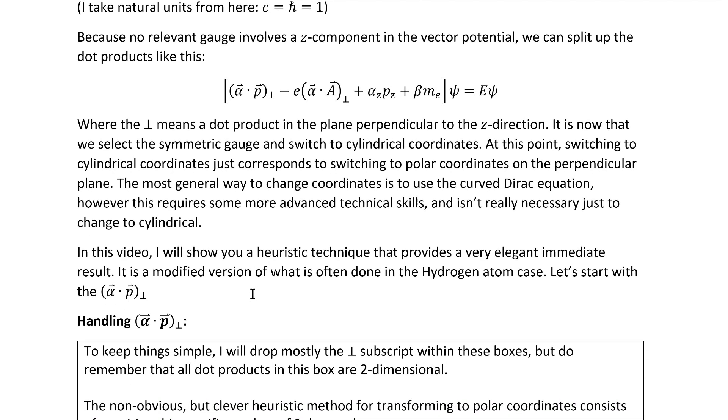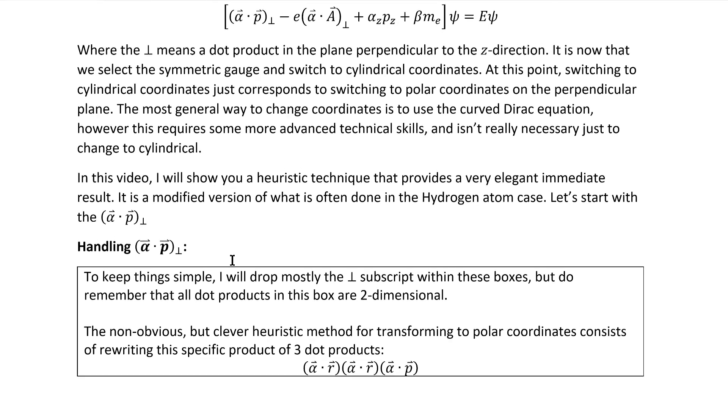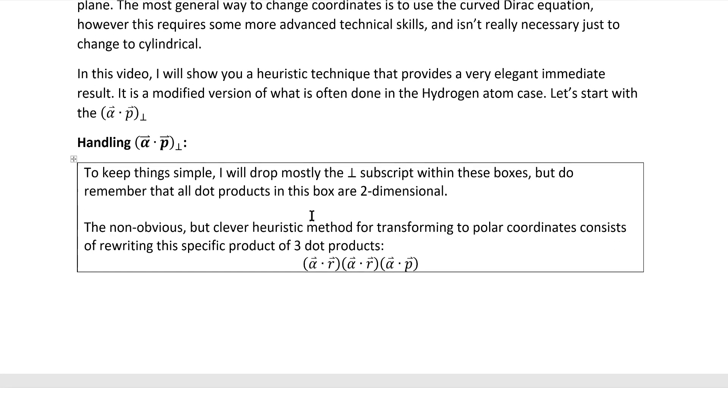In this video, I'll show you a heuristic technique that provides very elegant and immediate result and doesn't require those extra technical skills. It's a modified version of what's often done in the hydrogen atom case. Let's begin by rewriting this two-dimensional dot product. To keep things simple, I'll drop the perpendicular sign in these boxes, but remember that we are still dealing with all two-dimensional dot products, at least within the boxes.